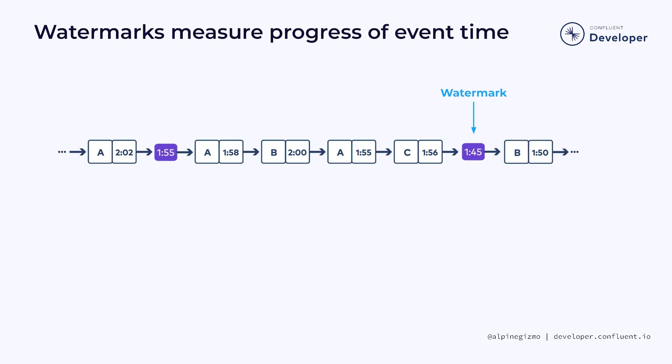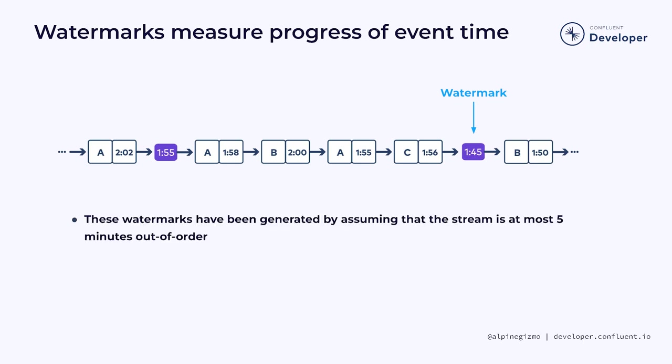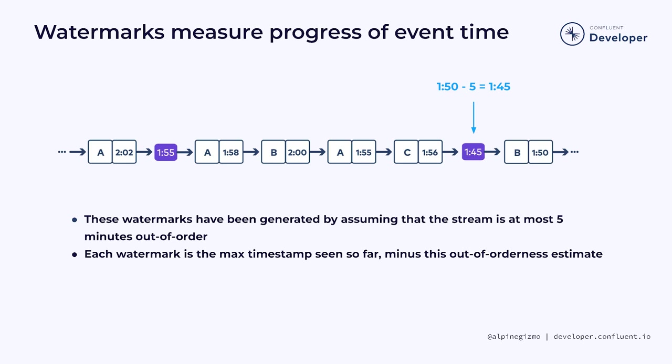Flink's watermarks embody this assumption about the degree of out-of-orderness. In this example, I have created a couple of watermarks based on the assumption that this stream is at most 5 minutes out of order. Flink's watermark generator inserts watermarks into the event streams. These watermarks flow with your data records. Each watermark carries a timestamp and marks a specific position in the stream.